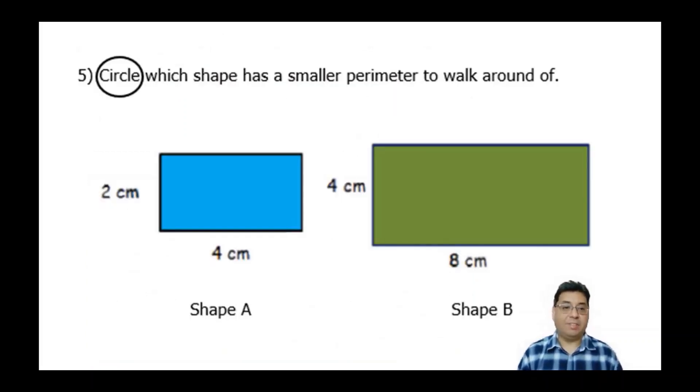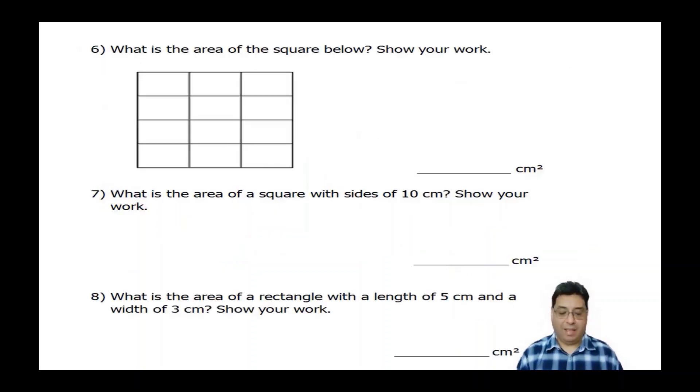And number five just says circle which shape has a smaller perimeter to walk around. So again, if you read the directions, that's not much for you to do here. And number six just says, what is the area of the square below? Show your work. Now I did blow up the image here a little bit. So it doesn't look quite like a square to you.